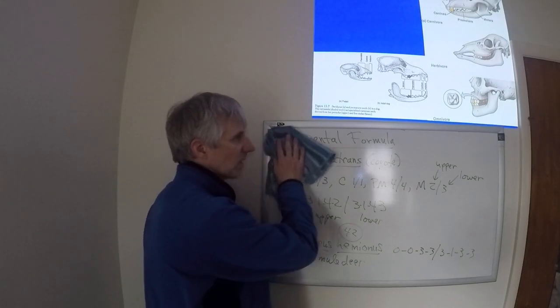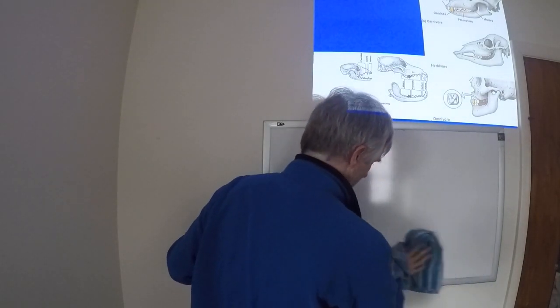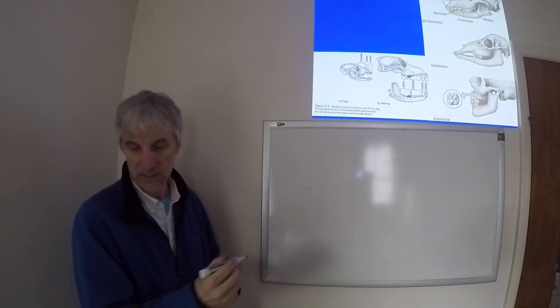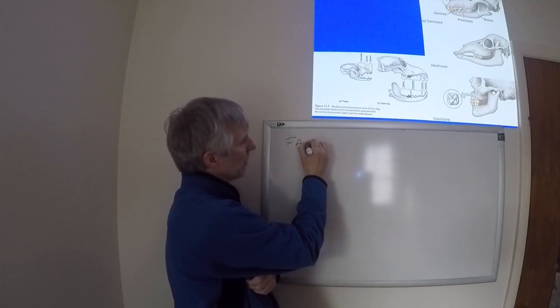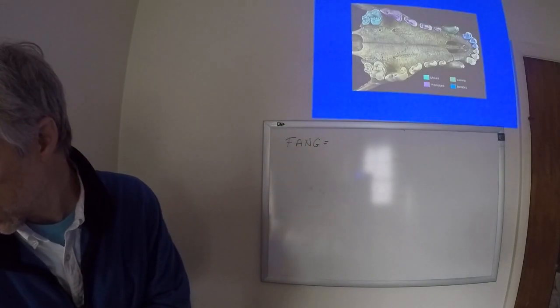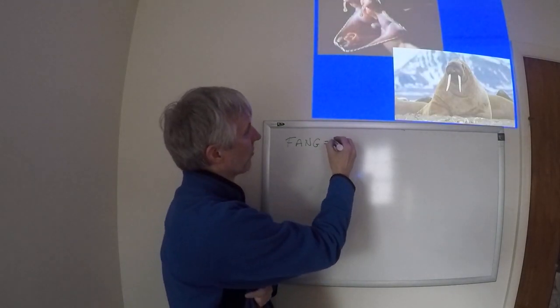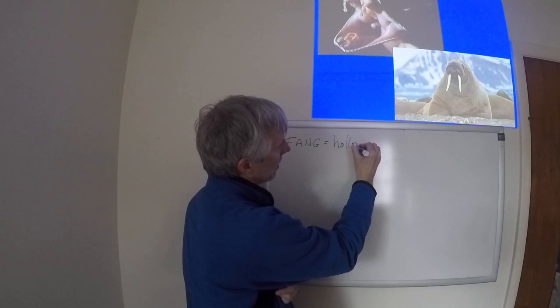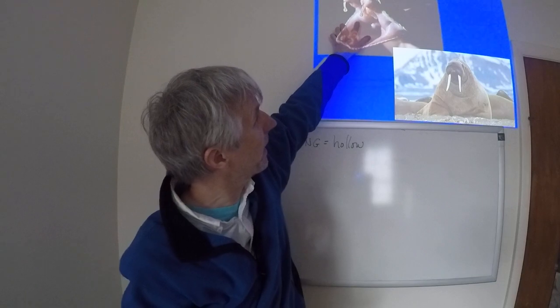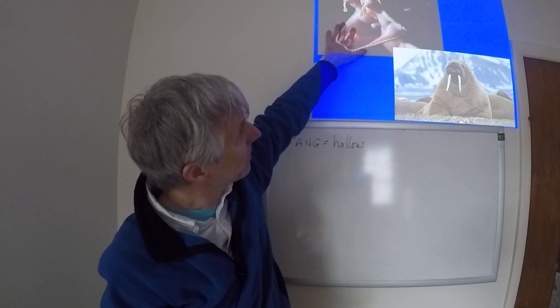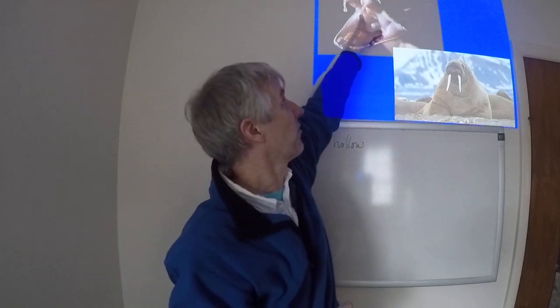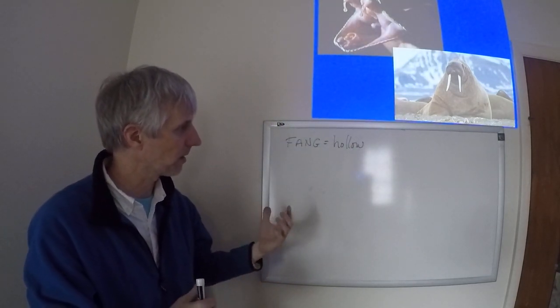Last thing about teeth: there are some modified teeth that you find out there in the world. These teeth include fangs, which are hollow teeth. There's a tube that connects the outside world to a poison gland, and the fangs then can be used to deliver poison from the gland because the fang is hollow.